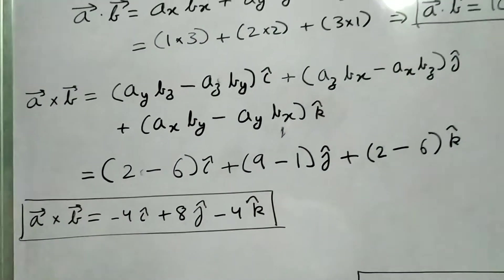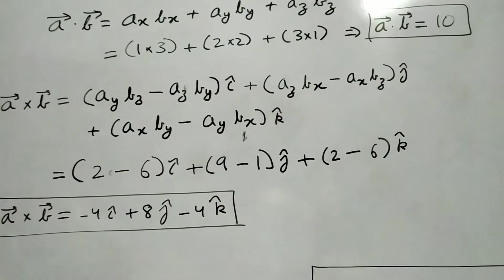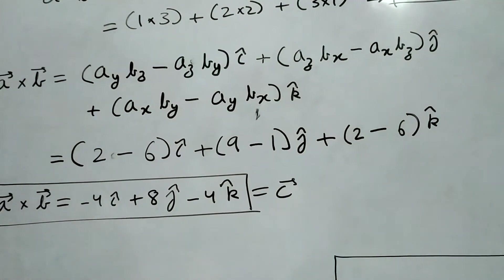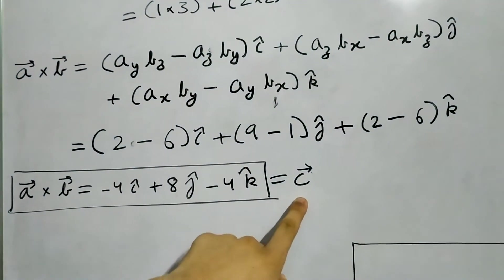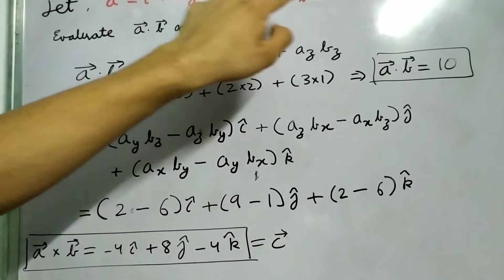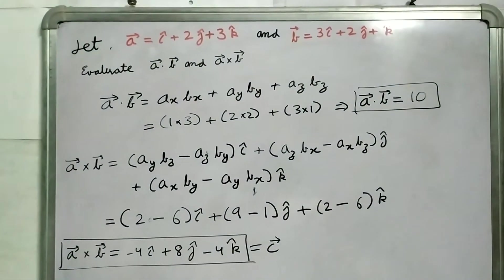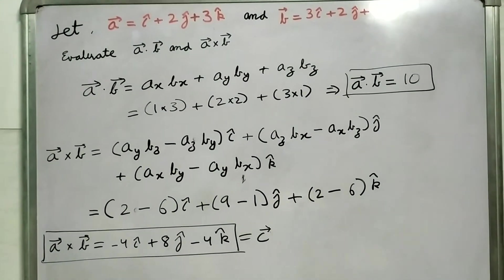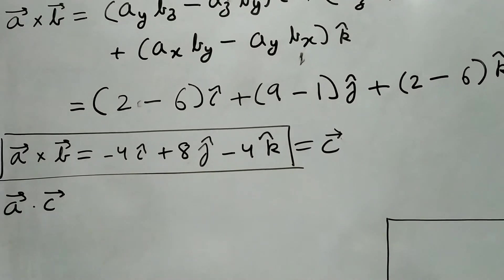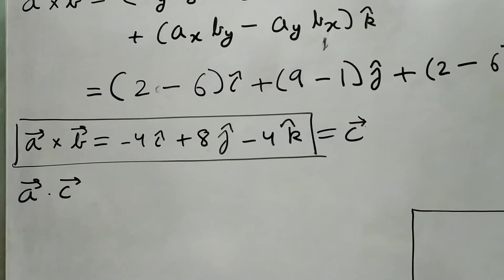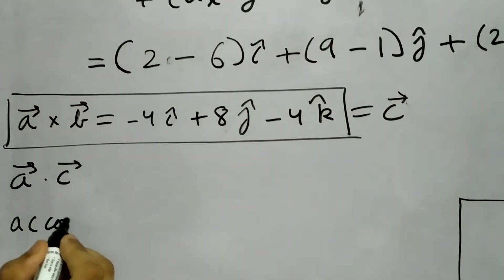Now I want you to check that A cross B, let's call this some vector C, C is perpendicular to A and B. And how do we do this? Look, just take a dot product of A with C.